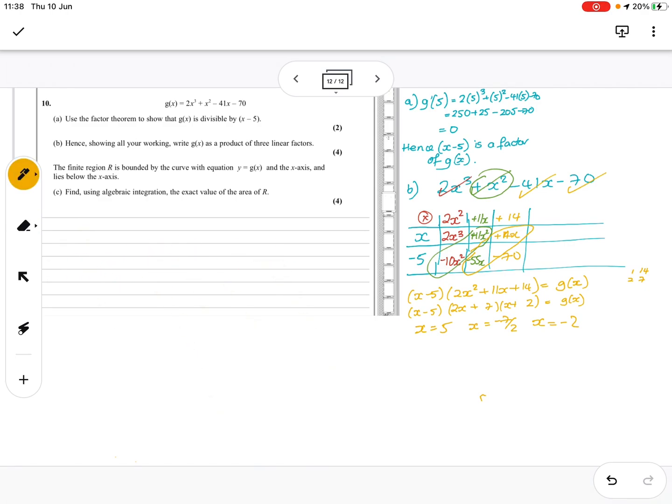My diagram is wrong. So I'm going to move it across a bit because we've got a lot of negatives. So we've got 5, -2, -7/2 is -3.5, so I'll put that there. It's a positive cubic, so it's going up like this and down. We're looking for where it lies below the x-axis, so we're looking for this area.